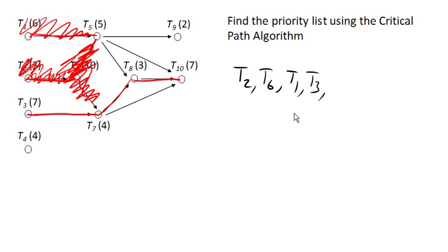So now we imagine we remove that, and we say what's my new longest path? Well, my new longest path is now here. 5, 3, 7, which is longer than 4, 3, 7. And so task 5 becomes next on my critical path list.